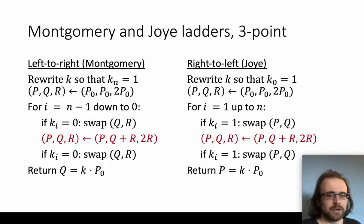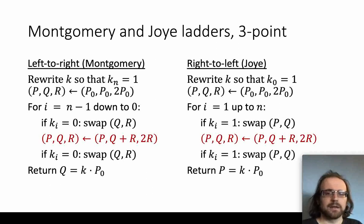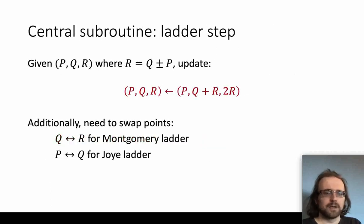The ladder I'll be working with in this paper is a three-point ladder. By adding either the difference of the two points to the Montgomery ladder, or the sum of the two points to the Zwa ladder, we get a ladder with a wider state, but this may help with the ladder operation. In both cases, for the three-point ladder, the ladder operation takes P, Q, and R and outputs P, Q plus R, and 2R. Furthermore, at the beginning of each ladder step, R is Q plus P, or possibly due to swapping, Q minus P.